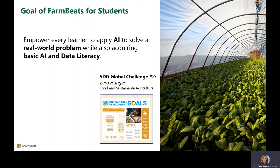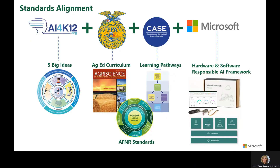We want students to know why AI is important and how it can be used to solve big problems like SDG global challenge number two, zero hunger. The standards the kit aligns to are important for our educator group. In addition to AI for K-12, we're also aligning with FFA's agriculture, food, and natural resources career cluster, which is focused on providing students with opportunities for leadership, personal growth, and career success. The curriculum for the kits is co-authored by FFA, curriculum for agriculture science education, CASE, and Microsoft.